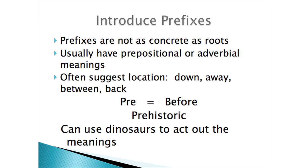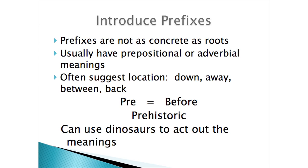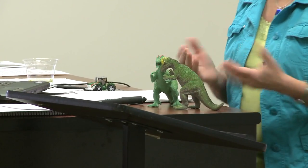Now let's try our prefixes. Prefixes are a little bit more difficult than the roots just because they're not as concrete — we saw that the roots all had verb action meanings. Prefixes are generally prepositions, so they're not as visual. We can generally put a gesture with them though. They often suggest location: down, away, between, back. You can also use props — I can use dinosaurs to introduce the concept. Dinosaurs are prehistoric creatures — what does 'pre' mean? Before we had recorded history.